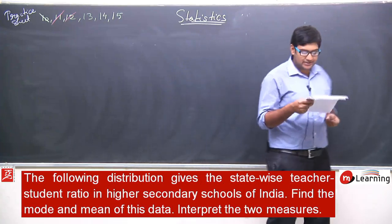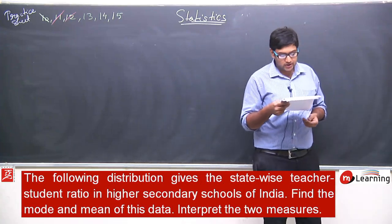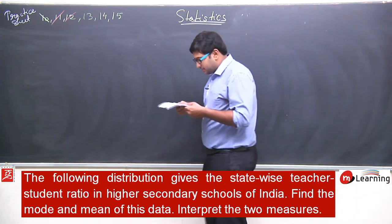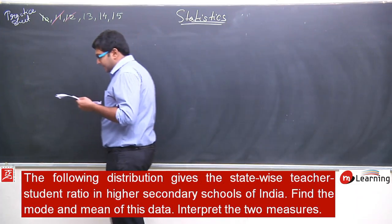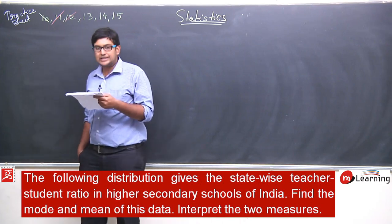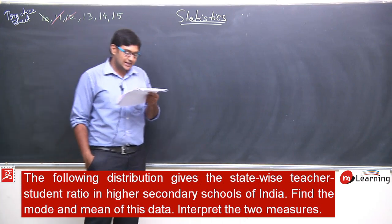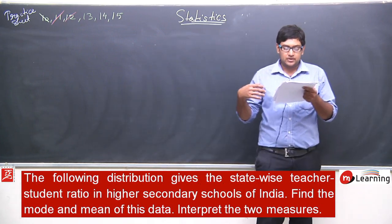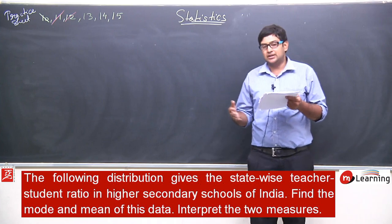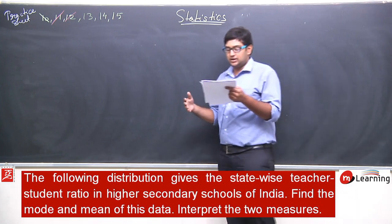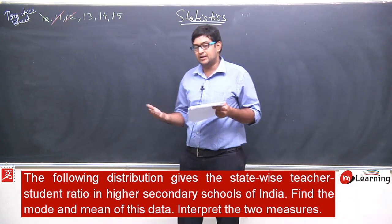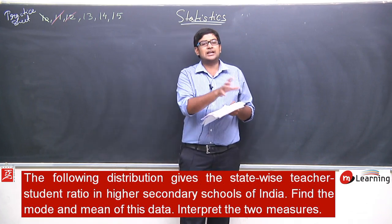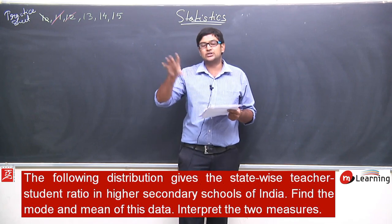The distribution gives the state-wise teacher-student ratio in higher secondary schools of India. Find the mode and the median of this data and interpret the two measures. The data shows different states and the number of teachers relative to a particular number of students — that is the ratio.